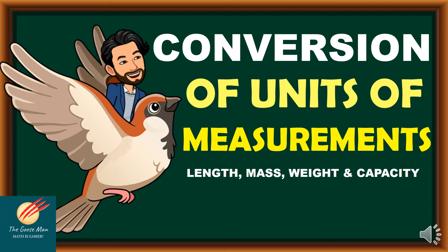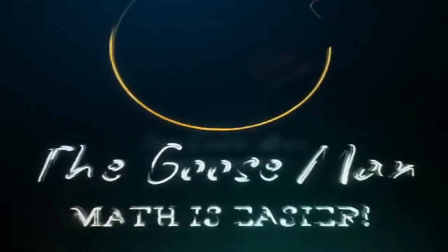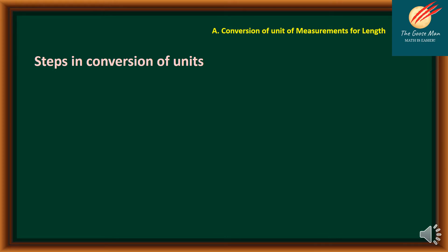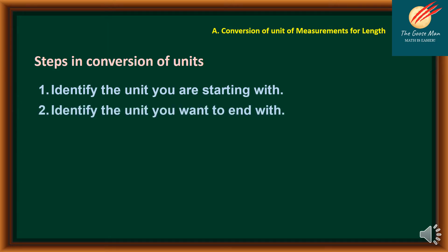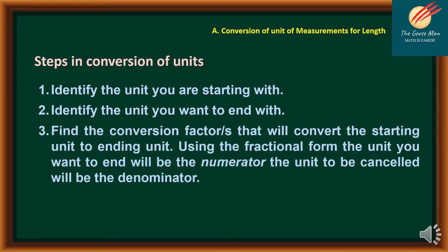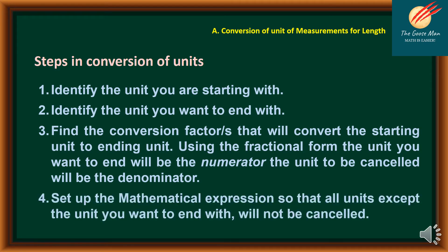Specifically, we will discuss the conversion of measurements for length, mass or weight, and capacity. The first part of our topic is conversion of unit of measurement for length. Here are the steps in conversion of units. First, identify the unit you are starting with. Number two, identify the unit you want to end with. Number three, find the conversion factor or factors that will convert the starting unit to the ending unit. Using the fractional form, the unit you want to end with will be the numerator. The unit to be cancelled will be the denominator. And finally, set up a mathematical expression so that all units except the unit you want to end with will be cancelled.